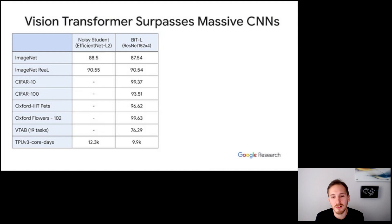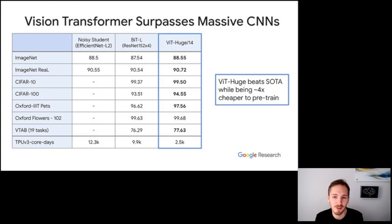Now, let's compare vision transformers to state-of-the-art convnets. We evaluate on multiple popular image classification datasets such as ImageNet, CIFAR, PETS, FLOWERS, as well as the VTAB benchmark that itself includes 19 different tasks. The last row also shows the pre-training compute in TPU core days. Our two baselines are NoisyStudent, which is a large EfficientNet pre-trained in semi-supervised fashion, and BiT, which is a large ResNet pre-trained in supervised fashion.